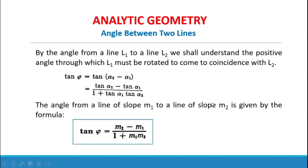Tangent alpha equals tangent of (alpha2 minus alpha1), which gives the formula: tangent alpha equals (tangent alpha2 minus tangent alpha1) all over (1 plus tangent alpha1 times tangent alpha2). The angle from a line of slope m1 to a line of slope m2 is given by: tan α = (m2 − m1) / (1 + m1·m2), where m1 is the slope of line 1 and m2 is the slope of line 2.